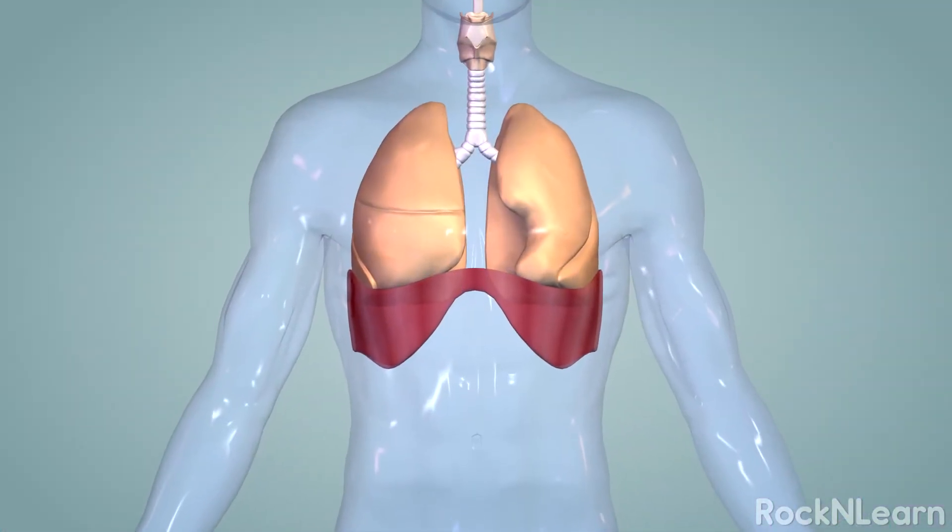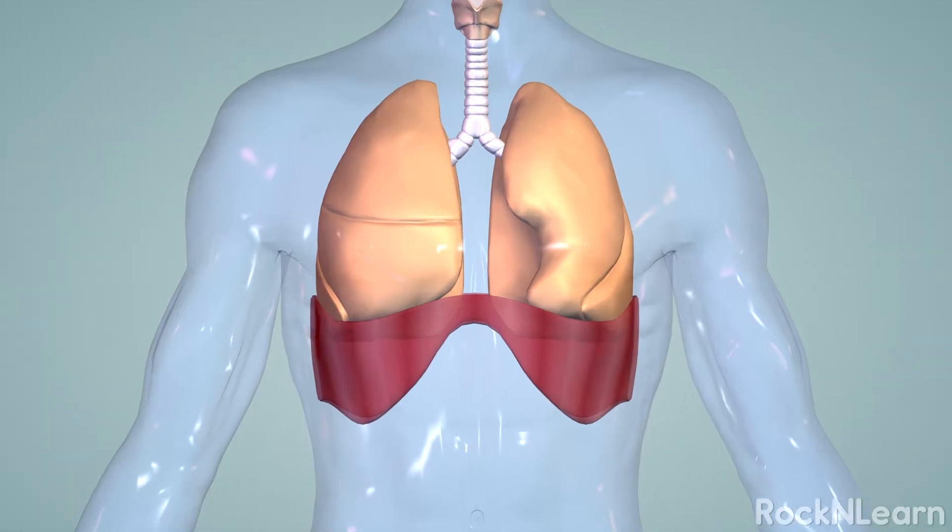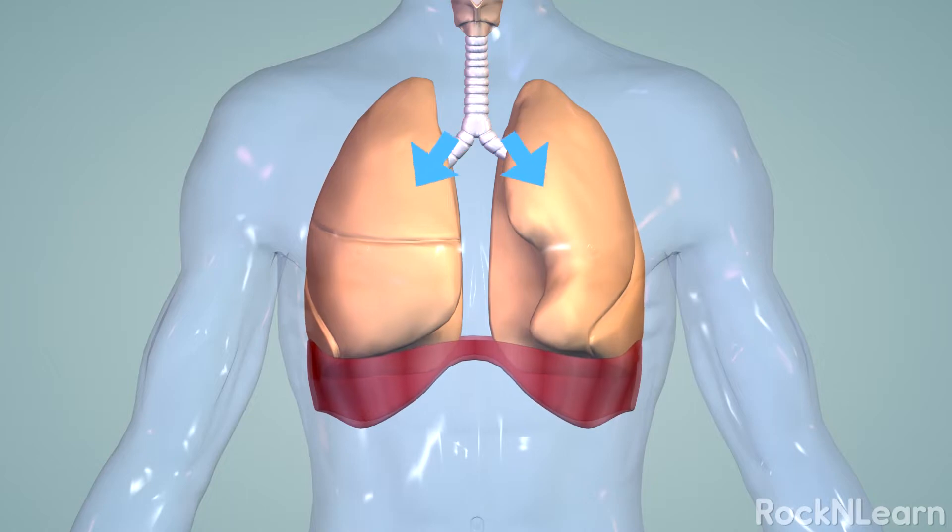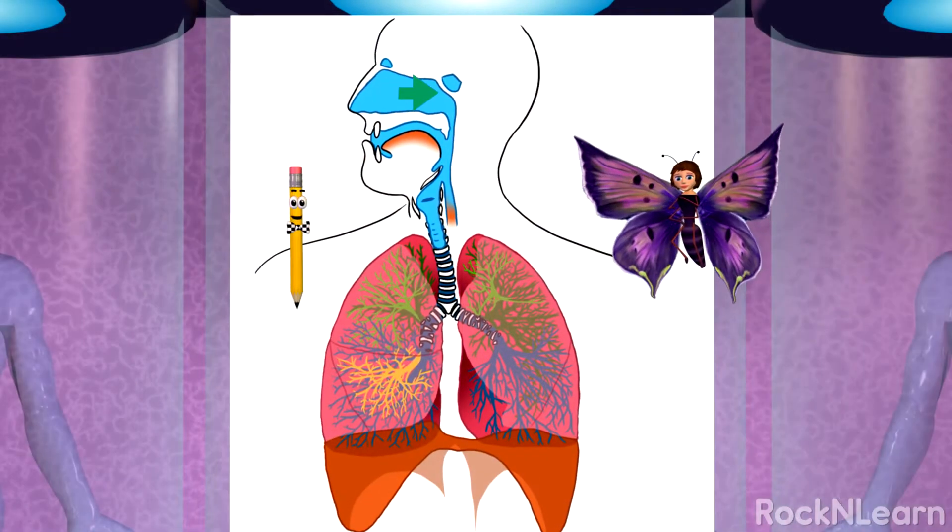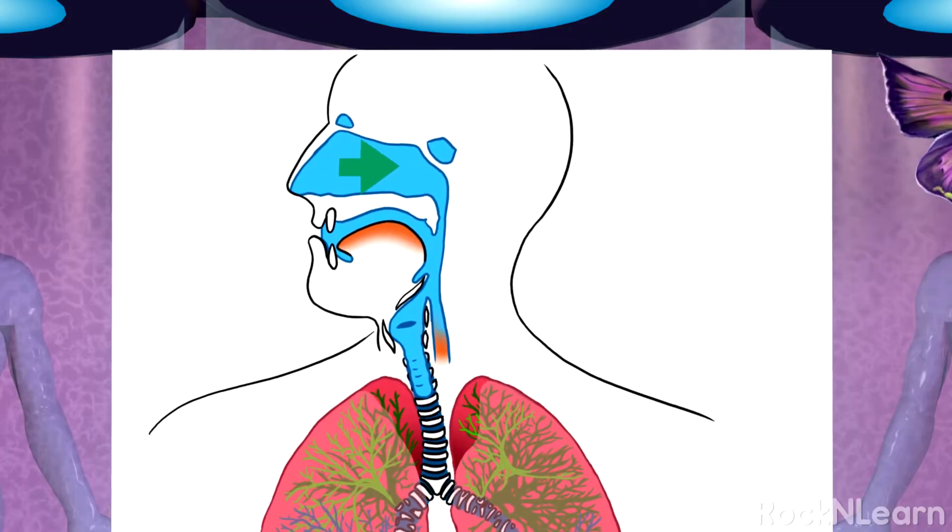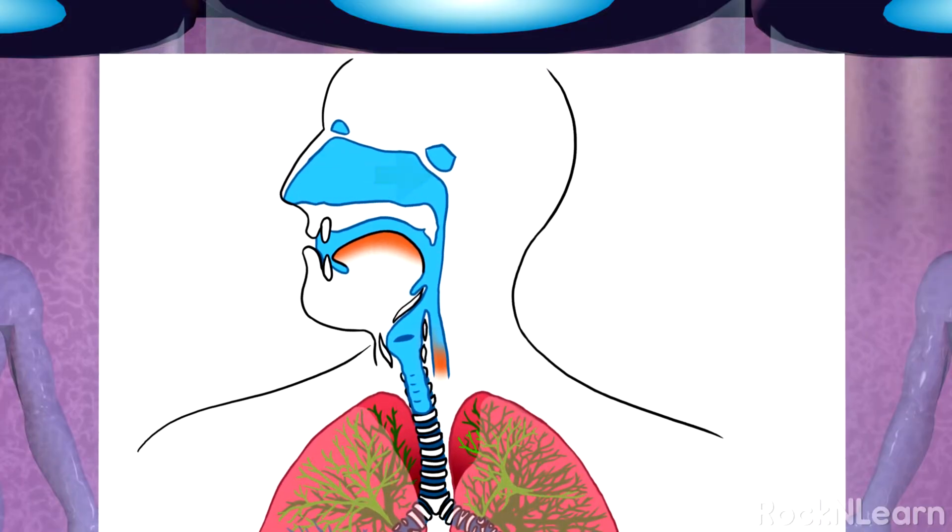This large muscle attached to the lungs is called the diaphragm. When it contracts, the lungs pull in air and you take a breath. Air enters through the nose into the nasal cavity. As it flows through the nasal passages, the air gets filtered, warmed and moistened. Mucus along these passages traps dust and particles in the air to clean it before it gets to the lungs.